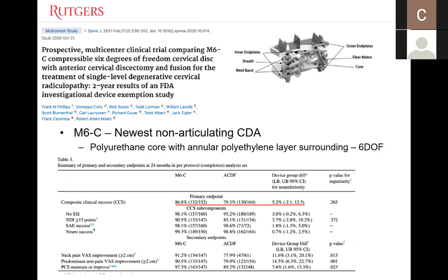The M6-C is one of the newer non-articulating discs that came to market around 2020, featuring a polyurethane core with six degrees of freedom. They just published two-year outcome data in 152 patients matched to 164 ACDF patients, demonstrating non-inferiority. There were no differences in supplemental surgical interventions, NDI score changes, or rates of serious adverse events. The implant did demonstrate significant improvements in VAS neck and arm pain scores at two years compared to ACDF. Interestingly, patients who underwent disc arthroplasty were using less chronic opioids at the two-year point compared to those who underwent anterior fusion.